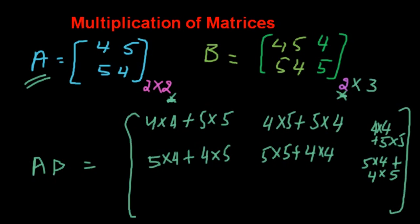If you are interested to multiply two matrices, you first understand that it can only be possible if the number of columns of the first matrix equals the number of rows of the second matrix. In this given example, the number of columns are two and the number of rows are two, so we can multiply A and B.